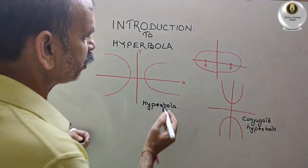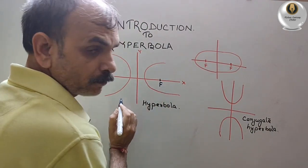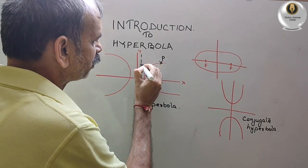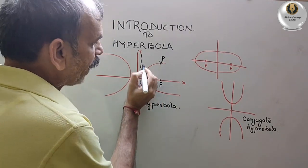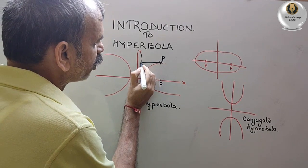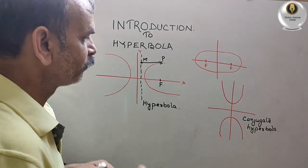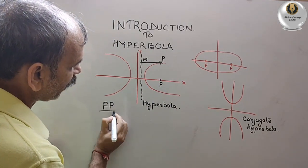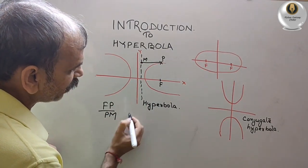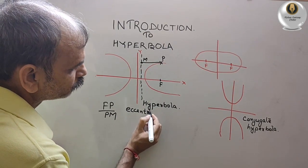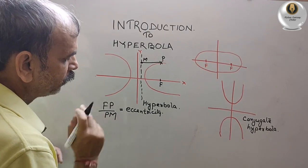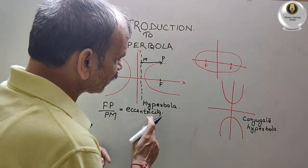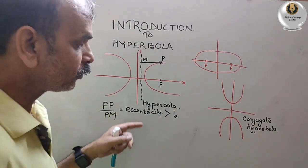As I have already told, suppose this is your focus, and this is the point P. Here comes your directrix — suppose this is the directrix. We have taken a point perpendicular to this, that is your M. If you take a distance from focus to the point, that is F·P divided by P·M — that is nothing but your eccentricity. But here, the ratio will come greater than one, so we can say eccentricity is greater than one. That is why it is known as hyperbola.